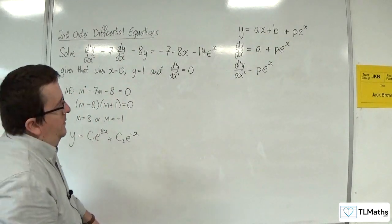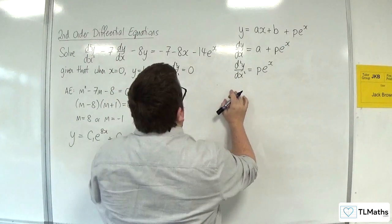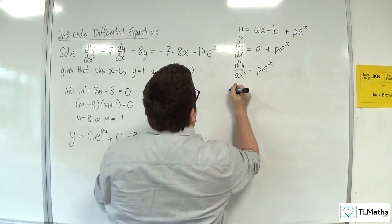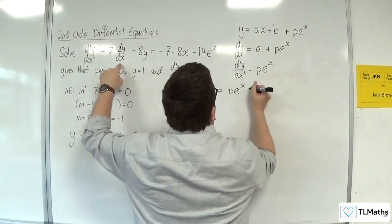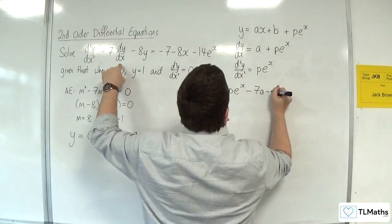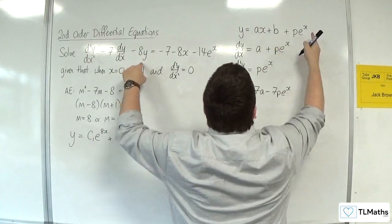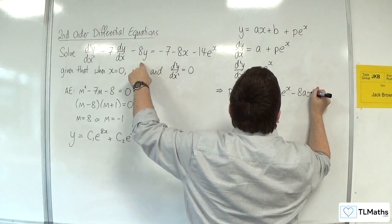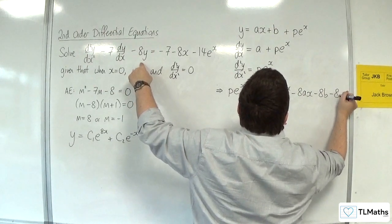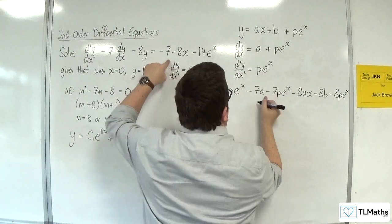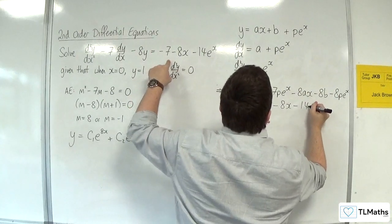So now I've substituted in the d²y/dx², so pe^x, take away 7 lots of dy/dx, so take away 7a, take away 7pe^x. Take away 8 lots of y, so take away 8ax, take away 8b, take away 8pe^x. Has got to be equal to -7 - 8x - 14e^x.